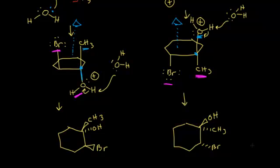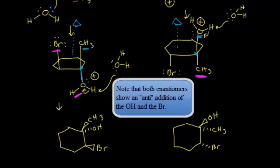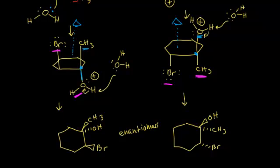Analyzing the two final products, they are enantiomers of each other. On the left, bromine comes out on a wedge and oxygen goes away; on the right, oxygen comes out on a wedge and carbon goes away on a dash. The bromine comes out at me on the left and goes away on the right. Both chirality centers have different absolute configurations, confirming these two products are enantiomers.